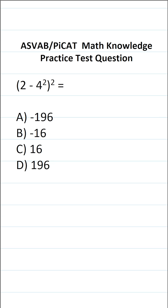This math knowledge practice test question for the ASVAB and PyCat says: 2 minus 4 squared, all squared, equals. On the ASVAB and PyCat, you're not given a reference sheet or a calculator. So for that reason, I recommend you get in the habit of copying things down and working them out on your own scratch paper.